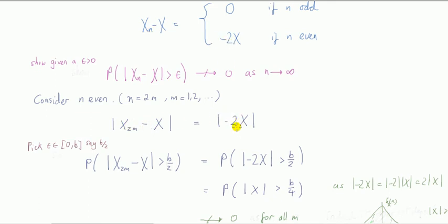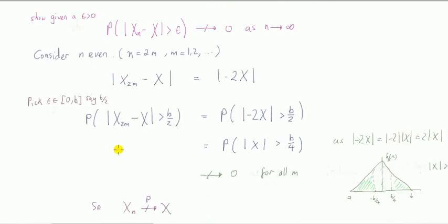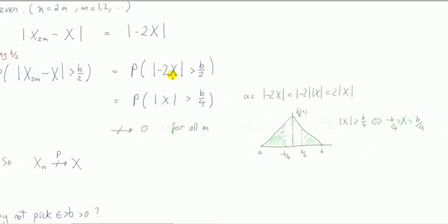So the absolute value of this is the absolute value of that. Now we have to pick an epsilon bigger than zero. Well, let's pick it, say, b over 2. It doesn't matter so long as it's bigger than zero and within here. So looking for this probability bigger than b over 2 is the same as looking for this guy bigger than b over 2.